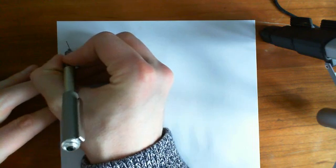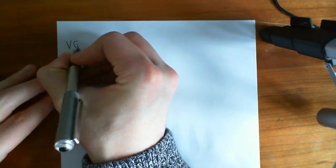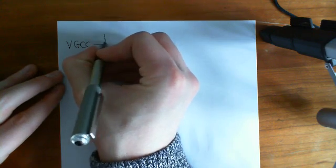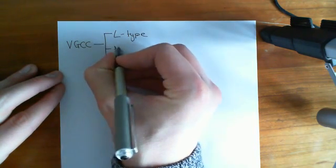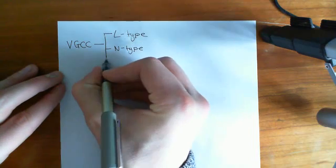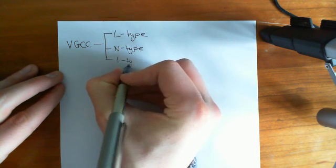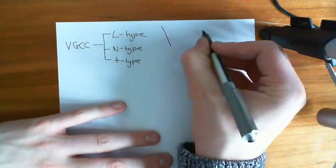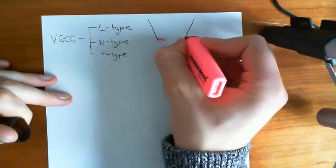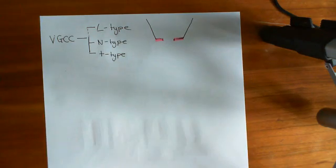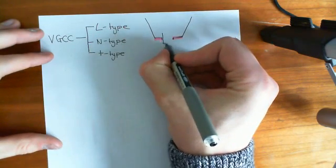The first division of voltage-gated calcium channels was into three different types. Voltage-gated calcium channels were initially divided into three types: the L-type, the N-type, and the T-type. Basically, they did this on the basis of patch clamping experiments — they took out bits of membrane with voltage-gated calcium channels in, and found that depending on where they took the piece of membrane from, the channel had slightly different properties.